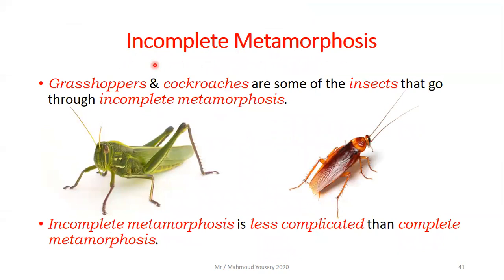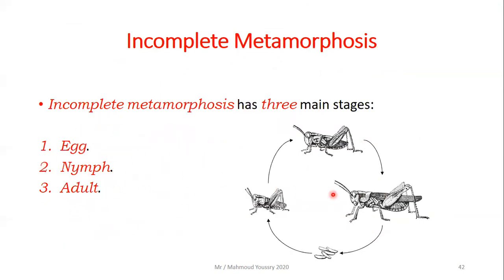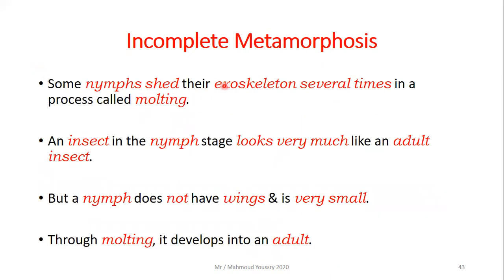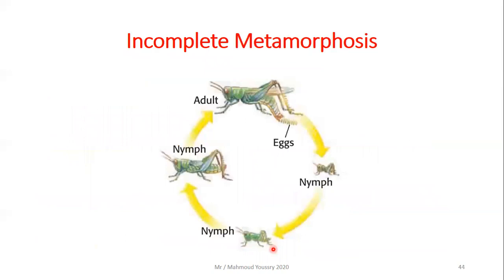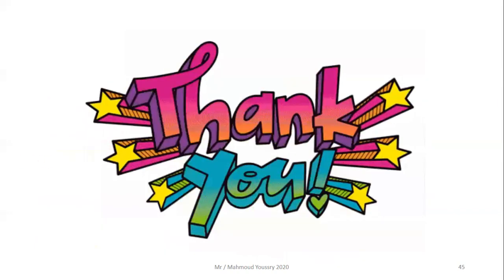Grasshoppers and cockroaches go through incomplete metamorphosis, which is less complicated and has only three stages: egg, nymph, and adult. The eggs hatch into a nymph — a small individual that looks exactly like the adult but is smaller and has no wings. Through molting, the nymph sheds its exoskeleton several times and eventually develops into a full adult.